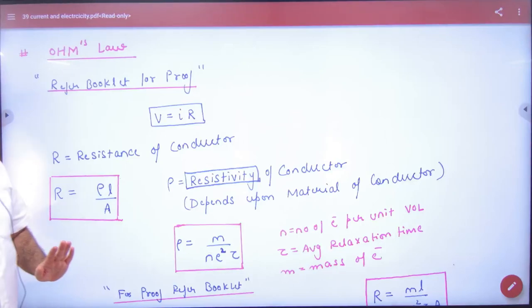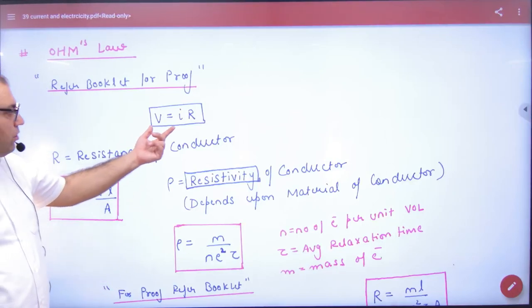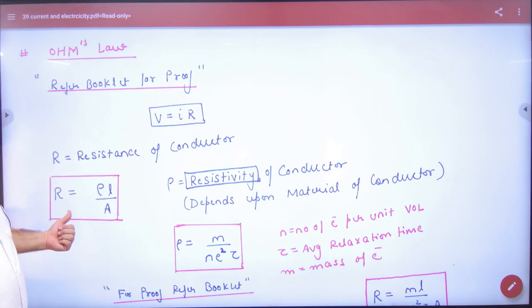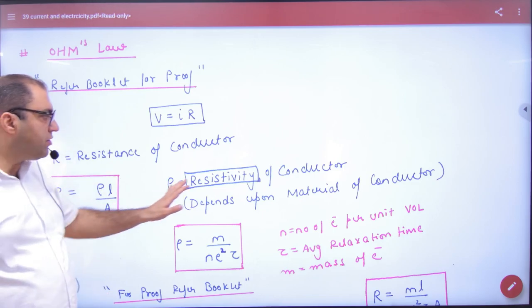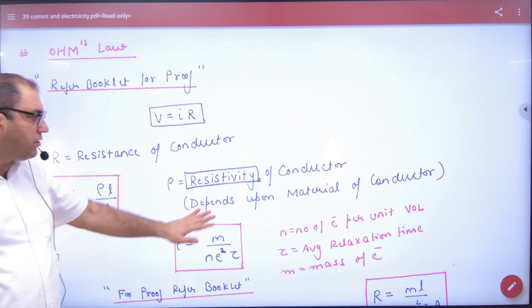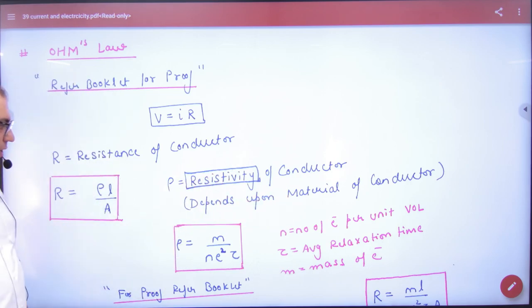So what did we do in Ohm's law? V equals IR. R formula: rho L by A. We have noted in the formula register where rho is resistivity of a conductor. Resistivity depends on material of any conductor.